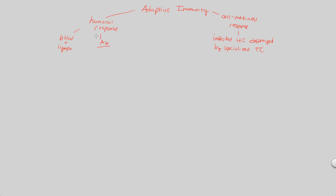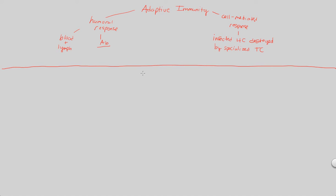This is basically the B cell response and the T cell response. What's important to recognize is that there's got to be some communication or middleman between both of these. Even though the humoral response explicitly involves B cells and cell-mediated explicitly involves T cells, there's actually a very important mediator for both — effector cells called helper T cells.